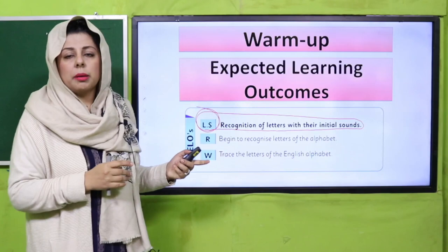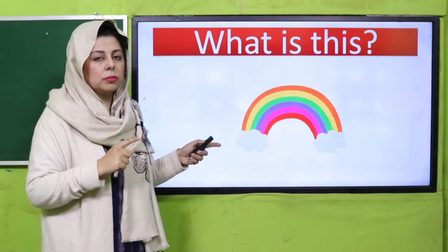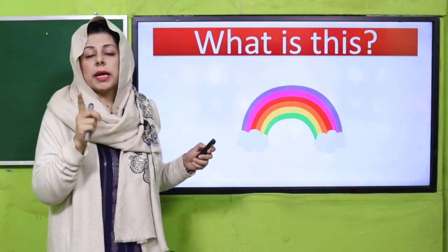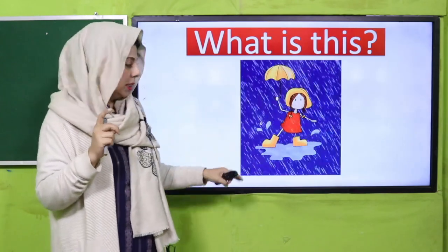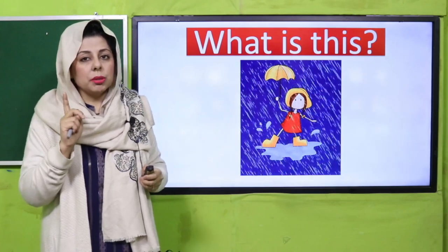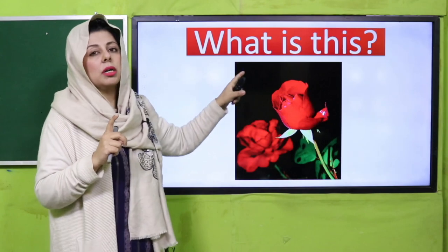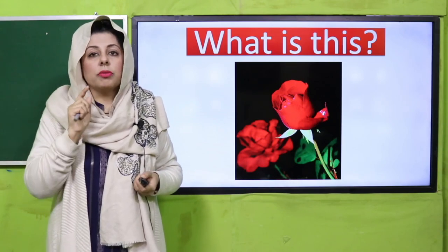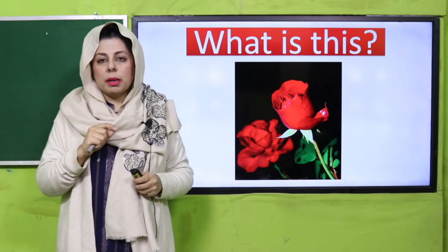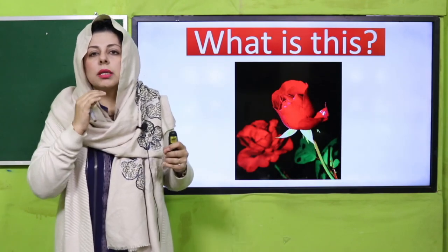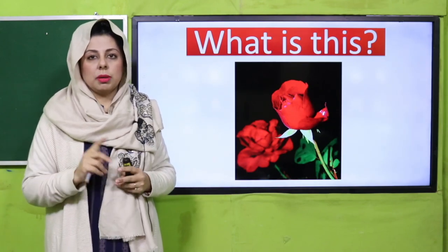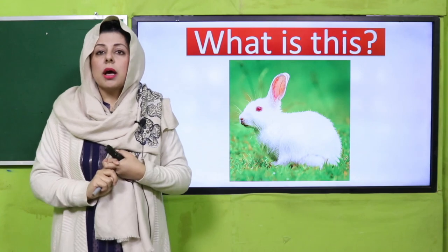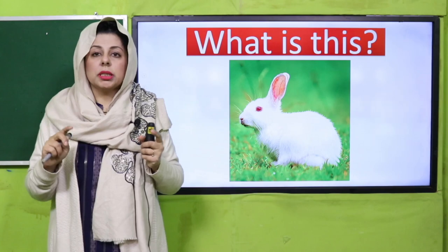Aapne un lafzon ko convert karna hai — unki English word ki vocabulary bhi build karni hai. So let's go back again — this is a rainbow with seven colors. Then rain — aur rain mein jahan jahan paani khada ho jaata hai usko kehte hain puddle. Okay, so this is something new for you. Then this is a rose — it has red color, and roses smell amazing. When you next time go to the park and see roses, go near them and smell them but don't pluck them. Flowers ko tortay nahi, unke paas ja ke sunhte hain. And then this small little cute rabbit — the starting sound is R. Rabbits eat carrots and vegetables.